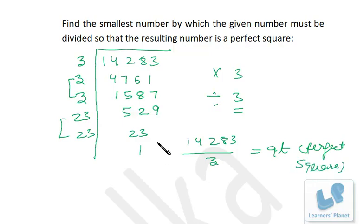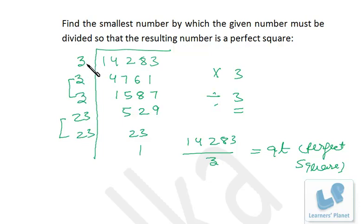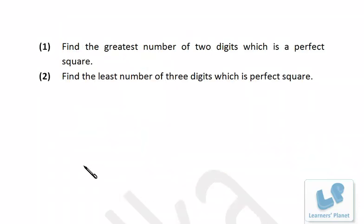To clarify both cases: if you multiply by 3, you get one more 3 making a pair, converting the number to a perfect square. If you divide by 3, the extra unpaired 3 is eliminated. Either way works depending on what the question asks. I hope that's clear.